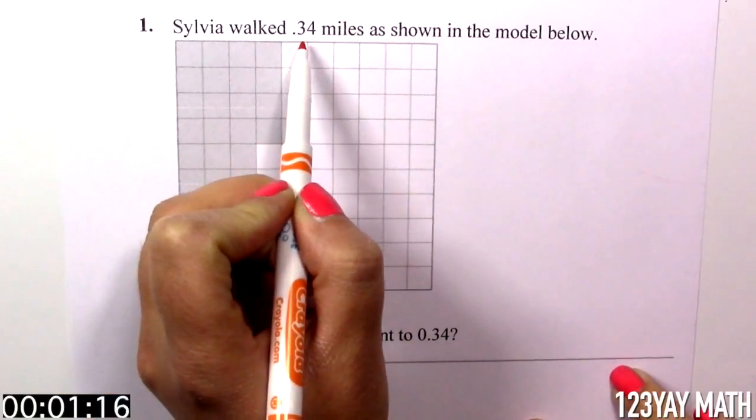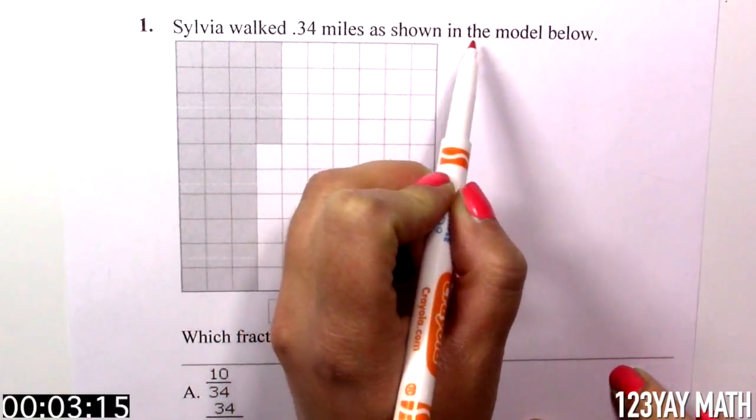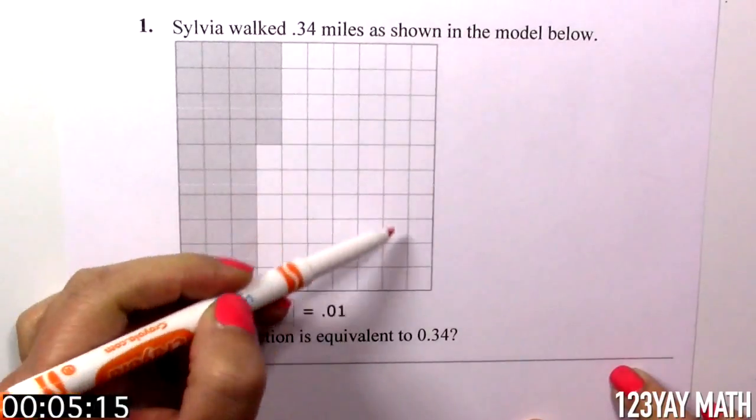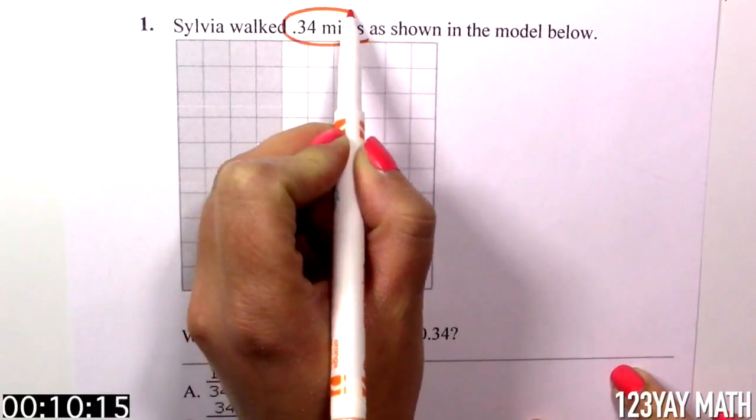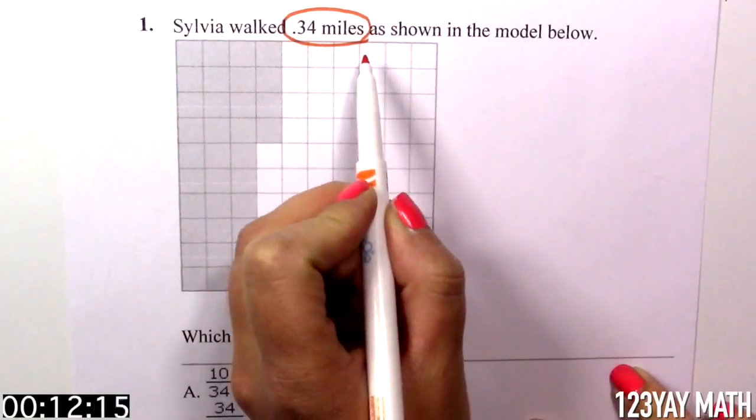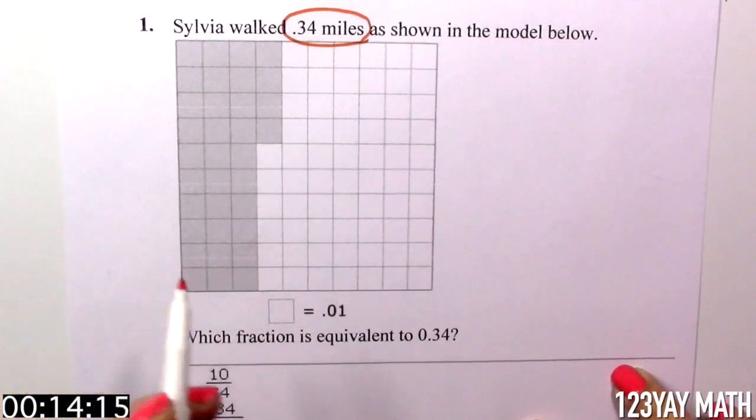Sylvia walked 0.34 miles as shown in the model below. Okay, here we have a model and the keywords are 0.34 miles as shown in the model below.